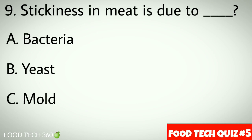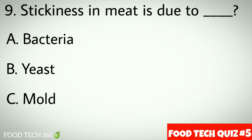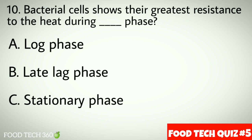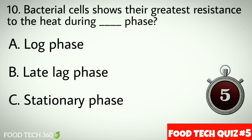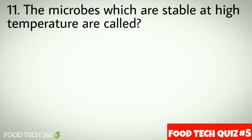Question number nine: stickiness in meat is due to dash. Options: a) bacteria, b) yeast, c) mold. Correct answer: c) mold. Question number ten: bacterial cells show their greatest resistance to heat during dash phase. Options: a) log phase, b) late lag phase, c) stationary phase. Correct answer: b) late lag phase.